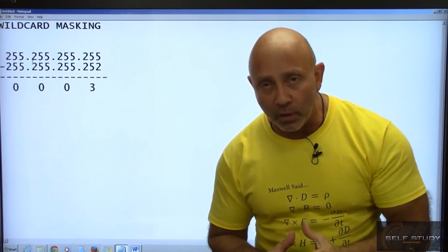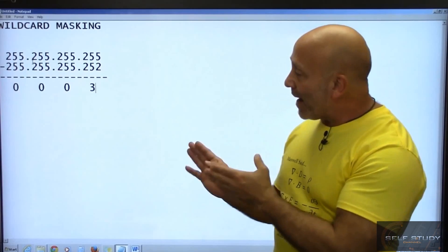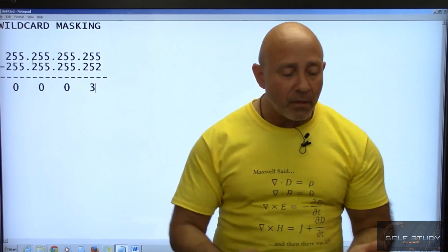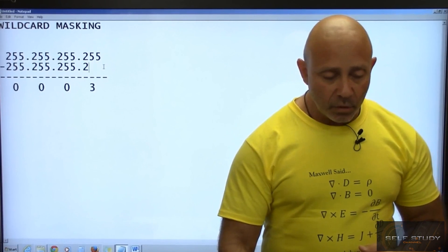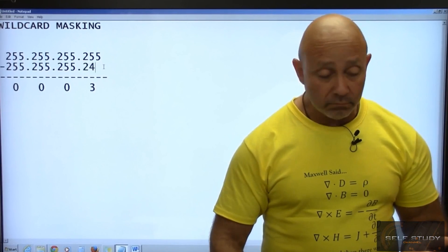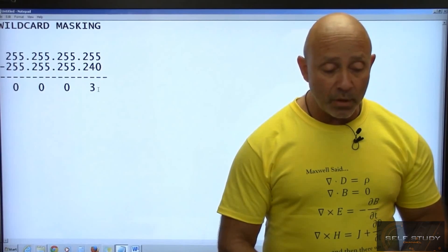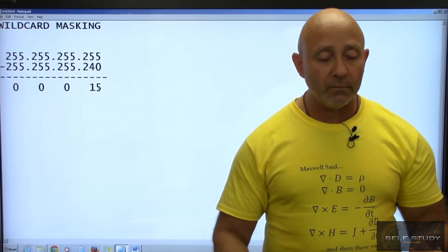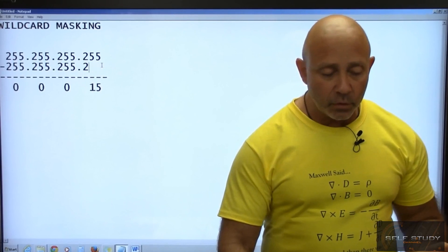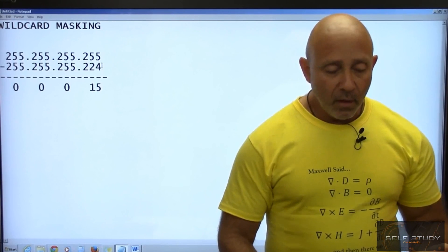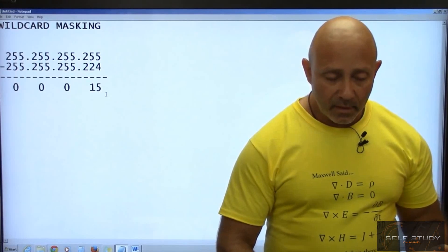That is how you get the wildcard mask. Let's make another example. Let's use 240. If you subtract that what do you got? 15. There's your wildcard mask. Let's use a different example, 224. What do you have? 31.